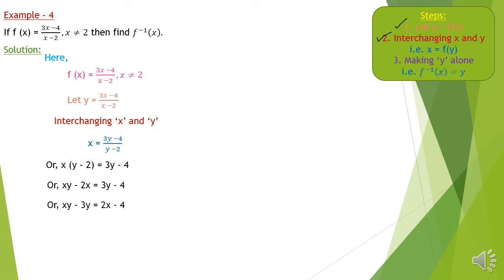When the input variable x is on both numerator and denominator, we get two y's in the equation. In the previous question there was only one y. We have to bring both y's to one side and the remaining terms to the other side. So: xy − 3y = 2x − 4. Take y common: y(x−3) = 2x−4. Now we have only one y and we can free it: y = (2x−4)/(x−3).